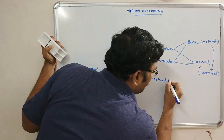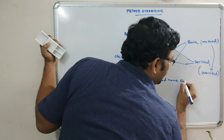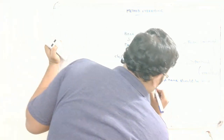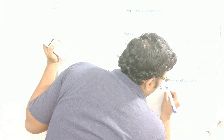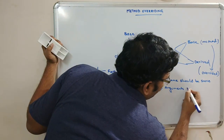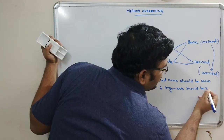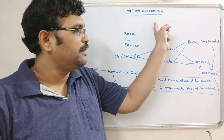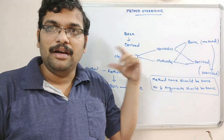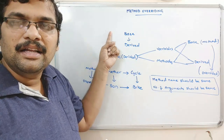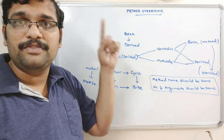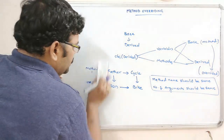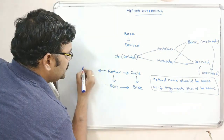The constraints to remember when implementing method overriding: the method name should be the same, and the number of arguments should also be the same. Whatever arguments are written in the base class, the same number of arguments and the same type of arguments with the same method name should be written in the derived class.